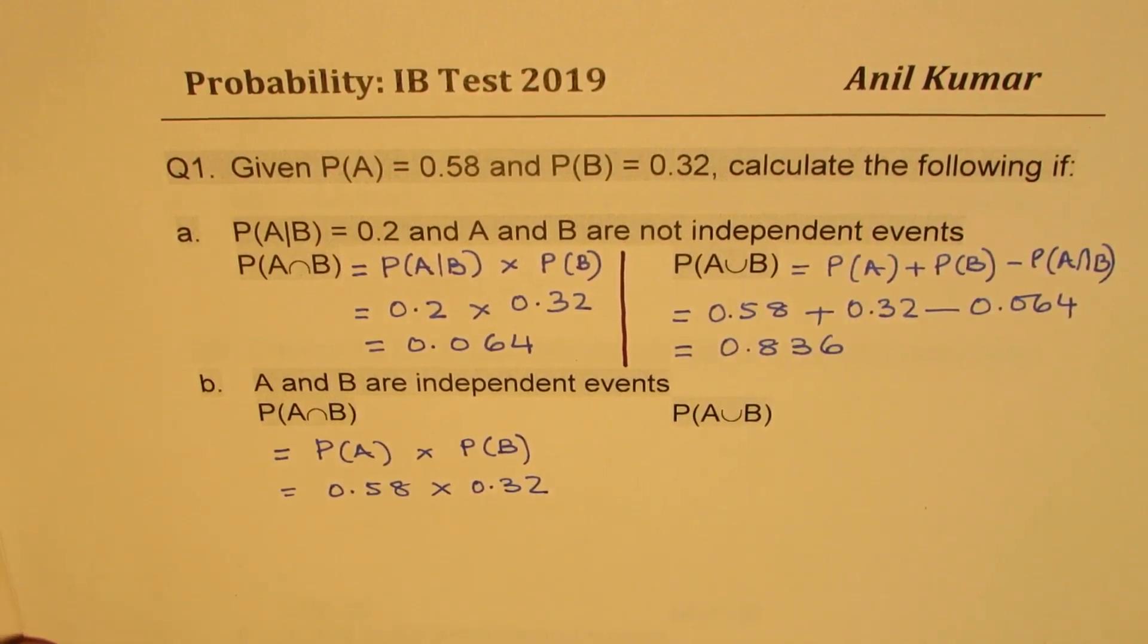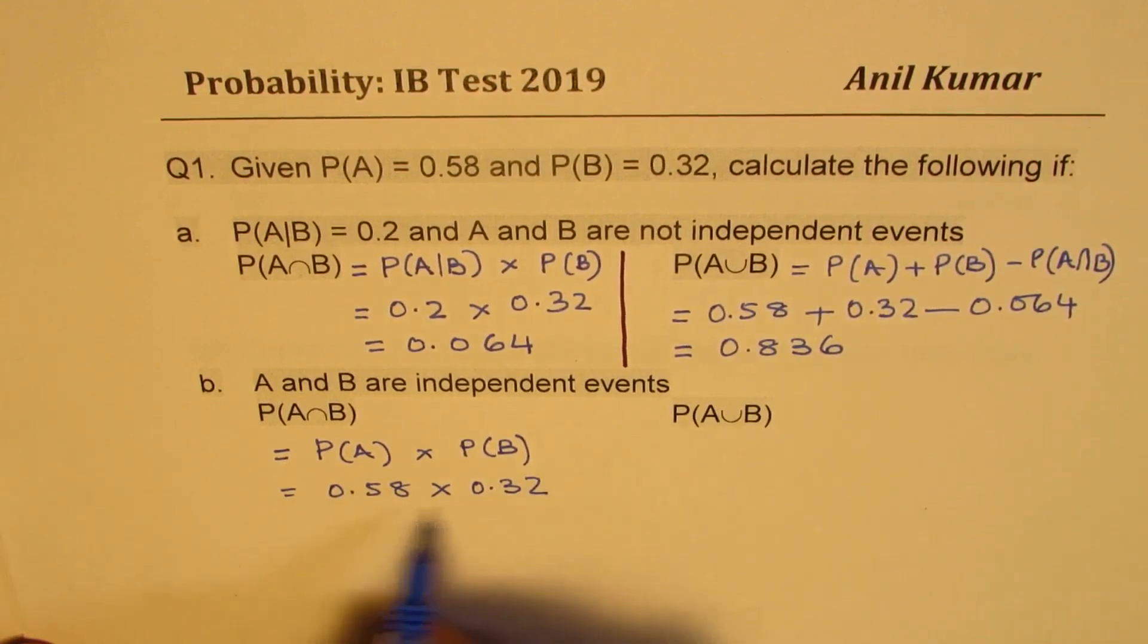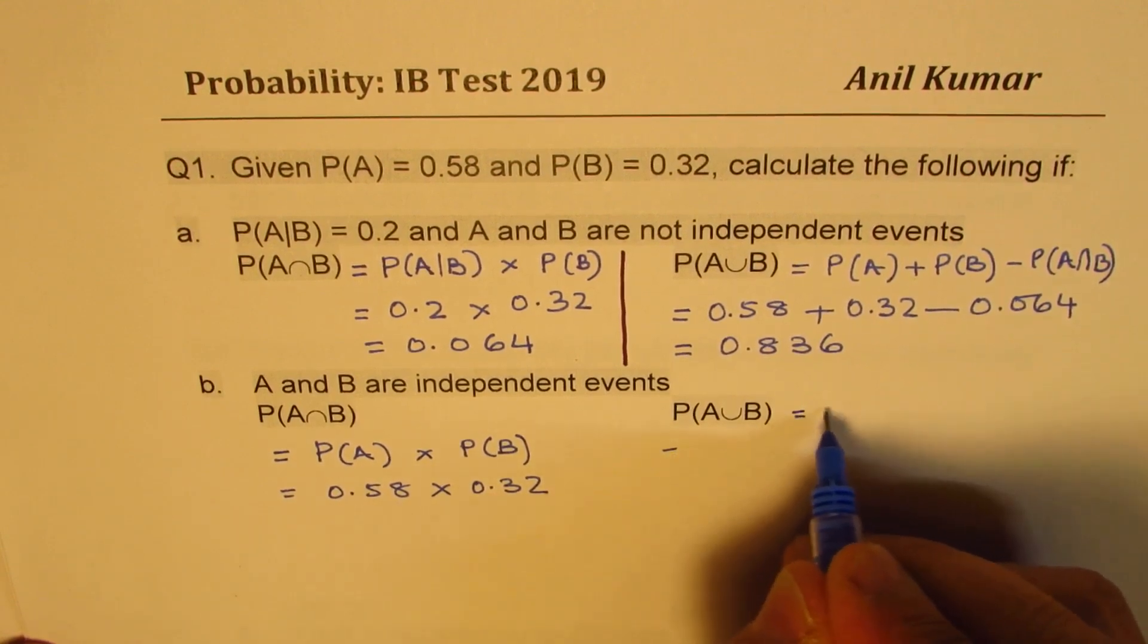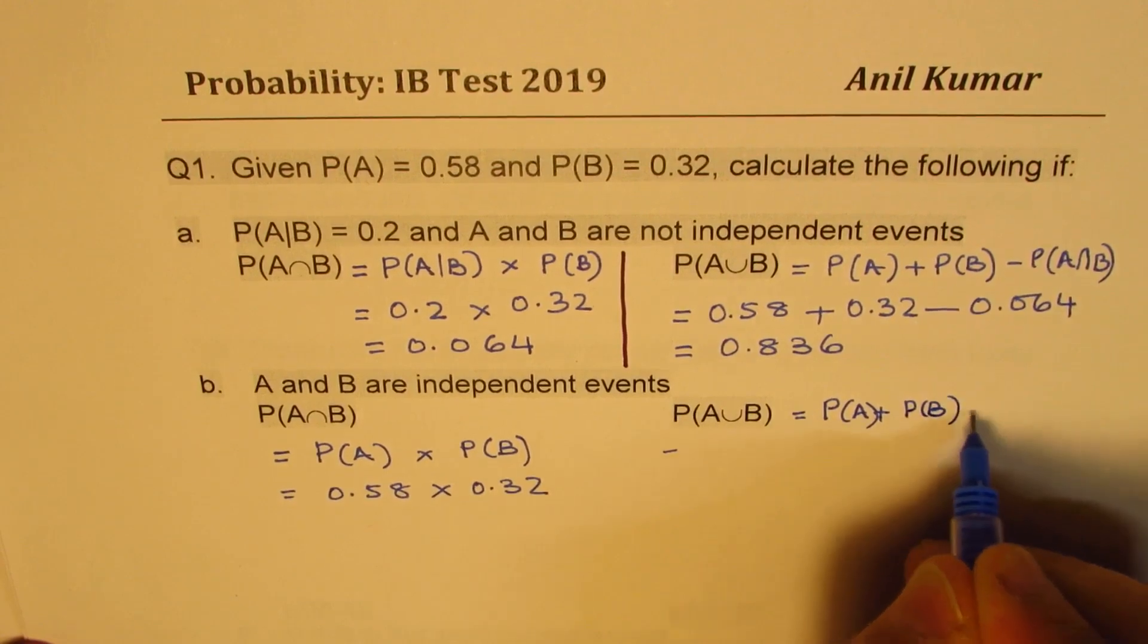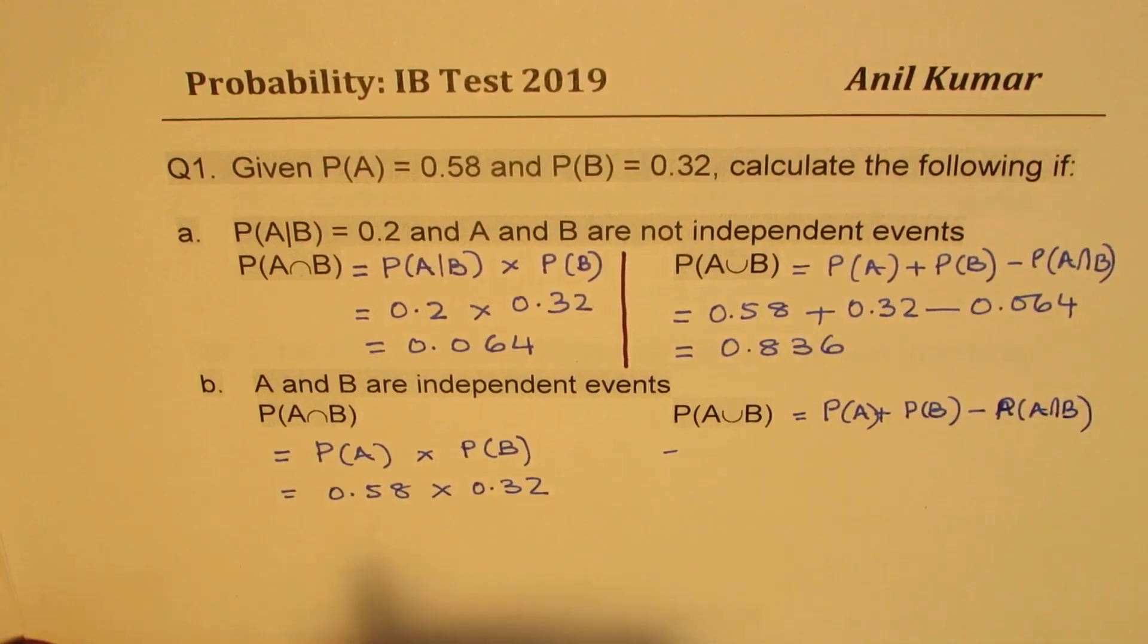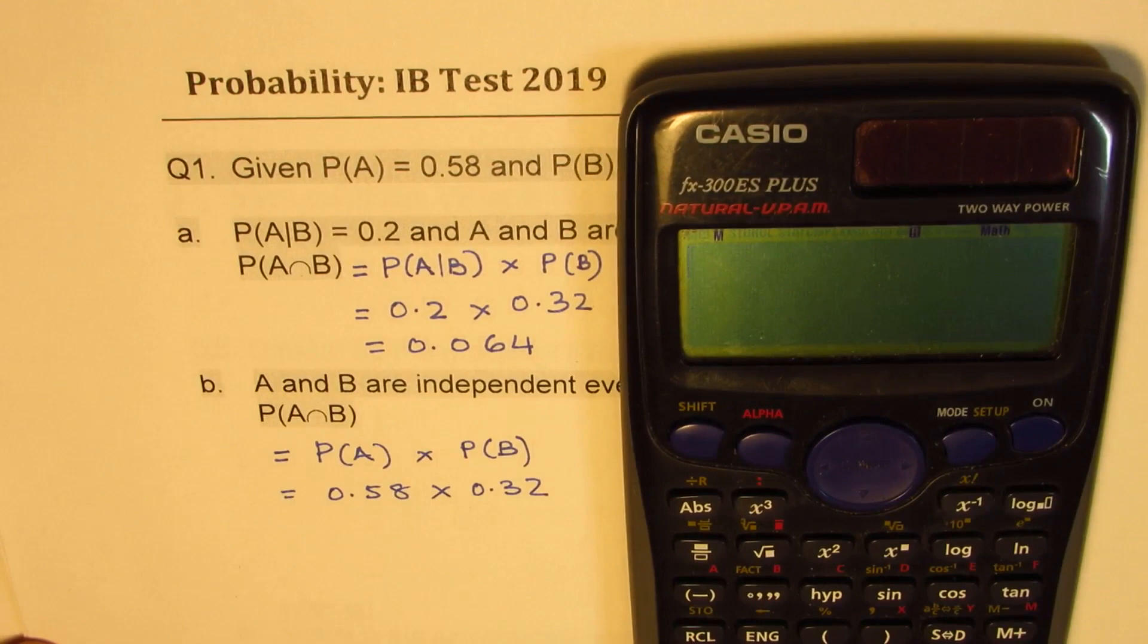Now in case of A or B, since they are independent events, we will find this. This is the same thing, which is equal to probability of A plus probability of B take away probability of A intersection B. So this A intersection B, we have to figure out before we find the other probability.